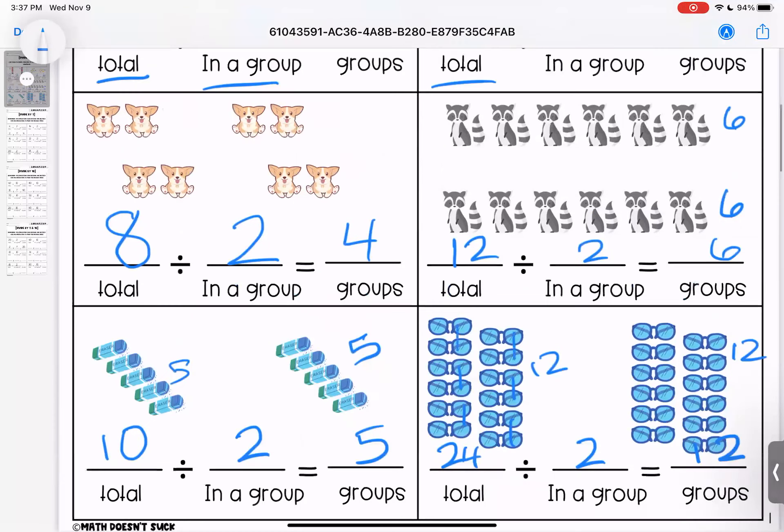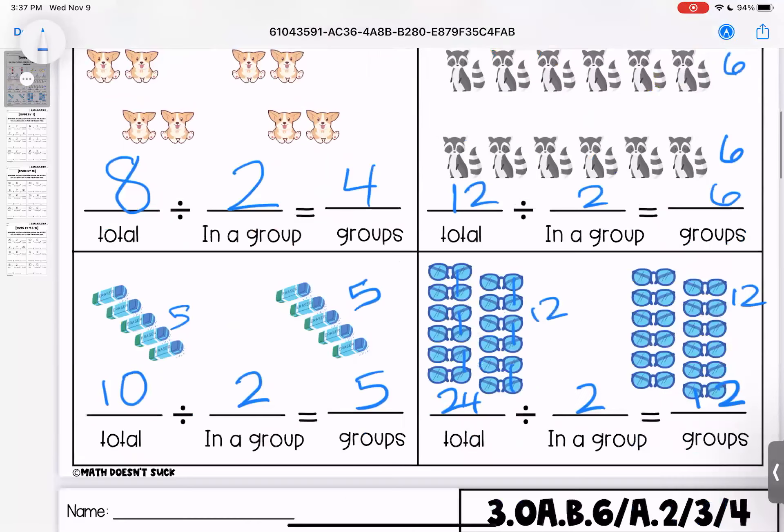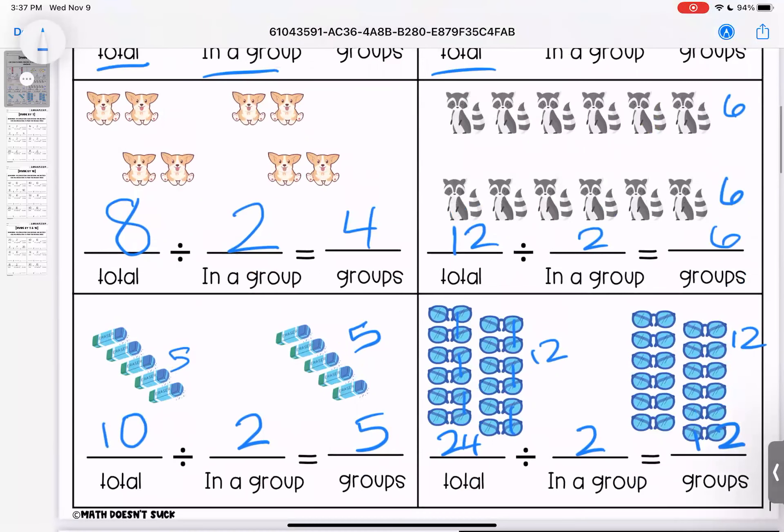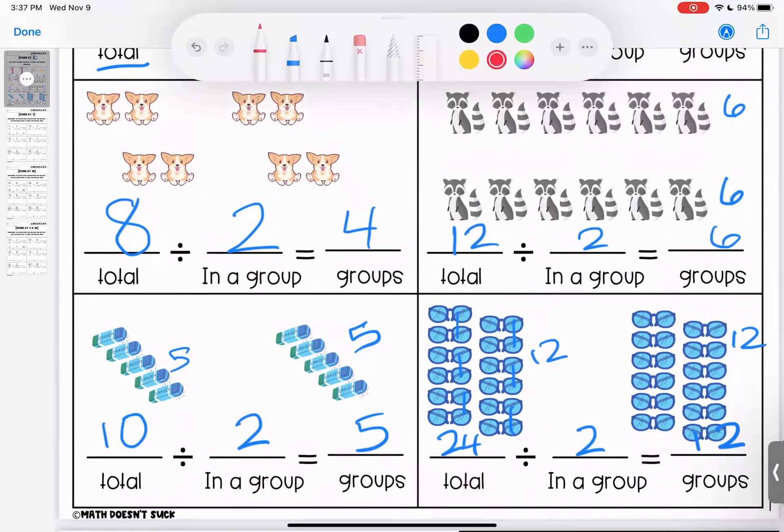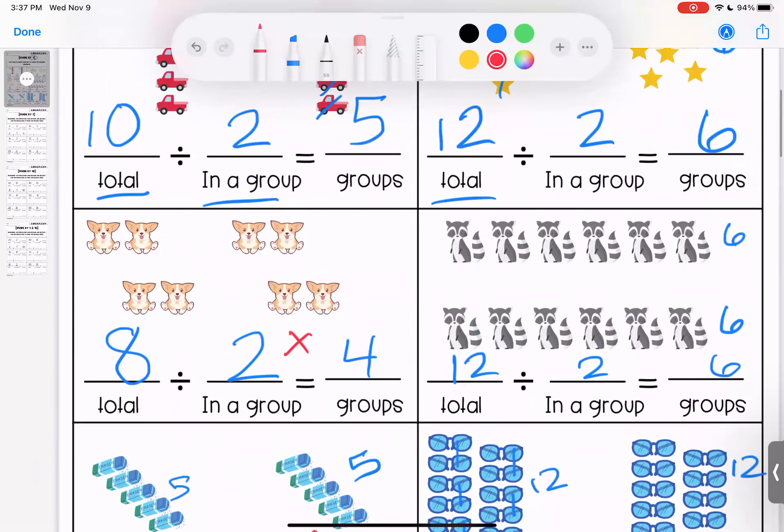Remember, we can use what we know about our multiplication to check these because they are reciprocal. So if I think of it as backwards, five times two is ten, twelve times two is twenty-four. I can check these: six times two is twelve, four times two is eight, six times two is twelve, five times two is ten.